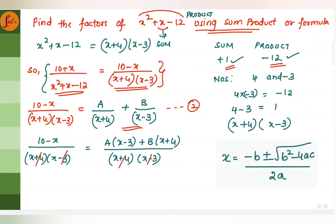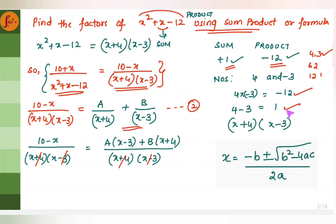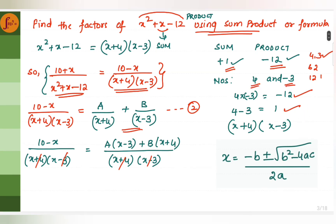There are multiple combinations: 4 and 3 give product 12, 6 and 2 give 12, 12 and 1 give 12. But when we add the two numbers, we need to get 1. So 4 and minus 3 works: 4 times minus 3 is minus 12, and 4 plus minus 3 is 1. Both the product and sum conditions are satisfied. Therefore the numbers are 4 and minus 3, giving factors x plus 4 and x minus 3.